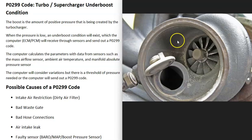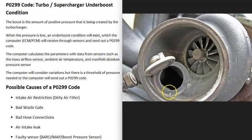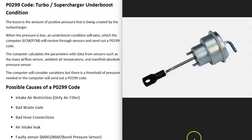Another common cause is a bad wastegate. Inside the turbo you have two ports — one going to the turbo to spin it, and the wastegate opens or closes depending on how fast the turbo should be running. If the wastegate gets stuck open or stuck shut, all the exhaust gases bypass the turbo and go straight out the exhaust, which causes problems.